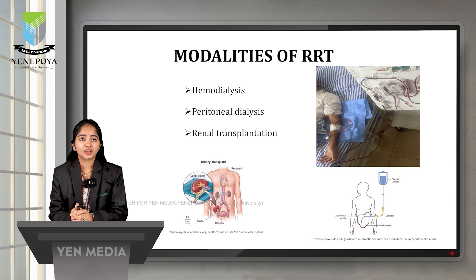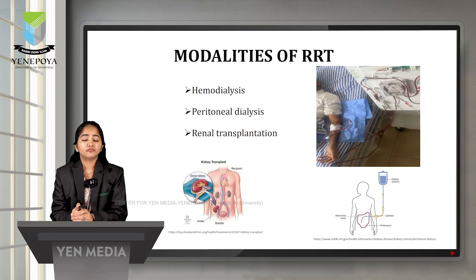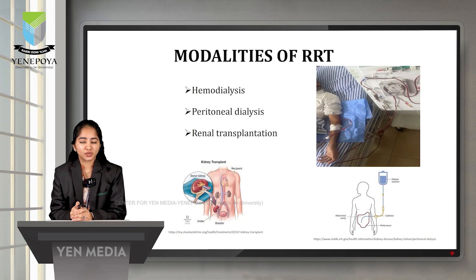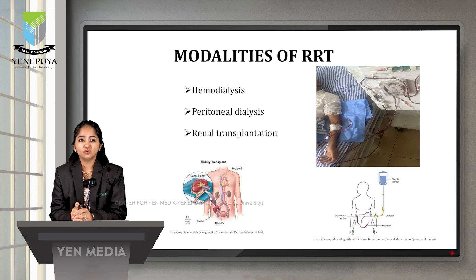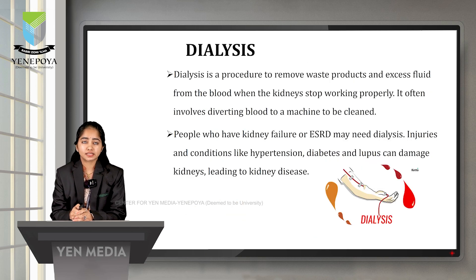The modalities of renal replacement therapy are: first, hemodialysis, where we use an extracorporeal circuit or machine and also a dialyzer, also called the artificial kidney, where filtration occurs inside the dialyzer. Second is peritoneal dialysis, where the peritoneum — a thin membrane lining the abdominal cavity — acts as a filter to remove excess fluid and toxins from the patient's blood. Third is renal transplantation.